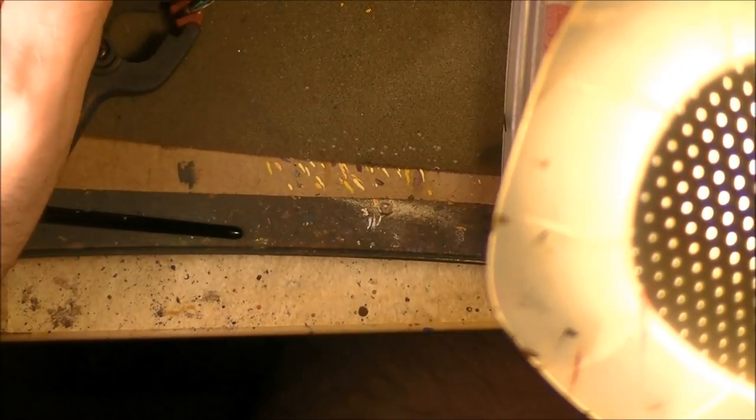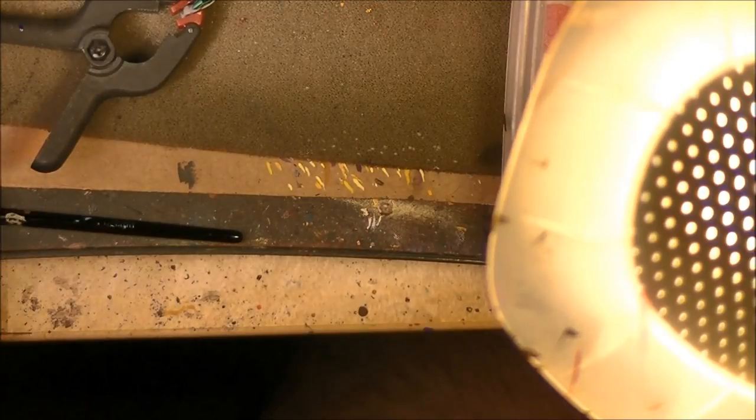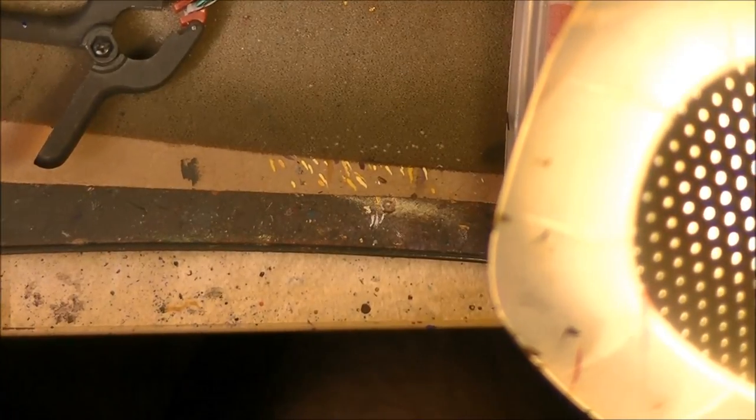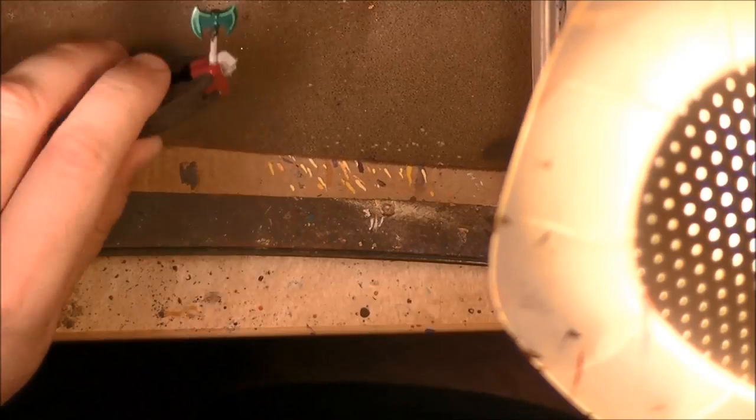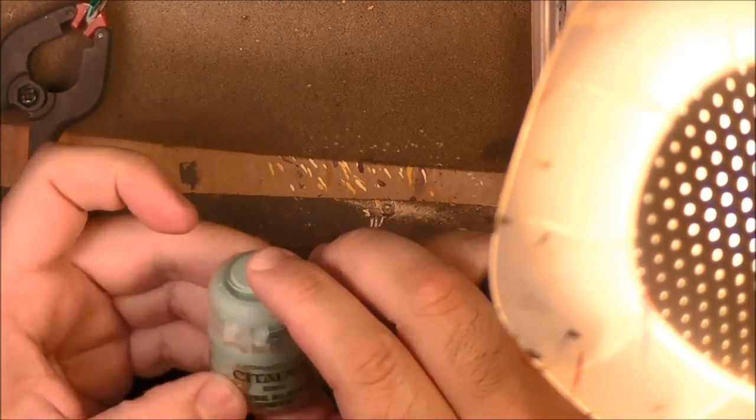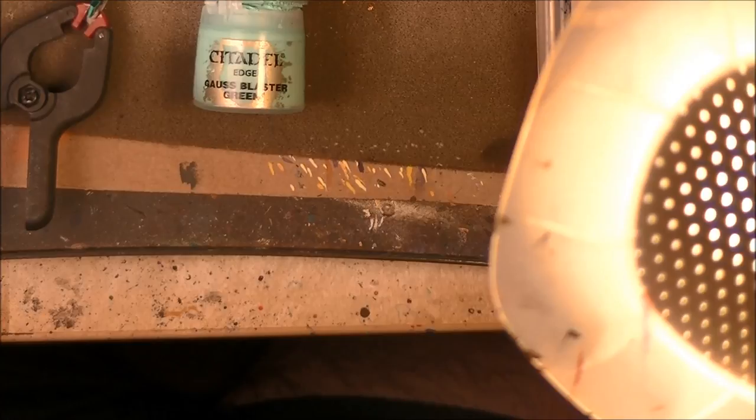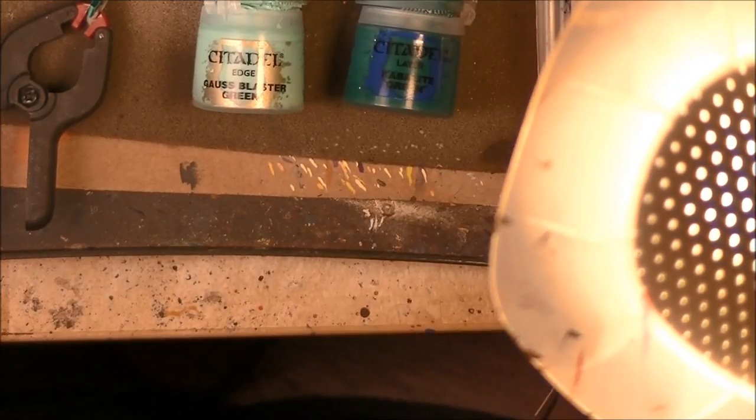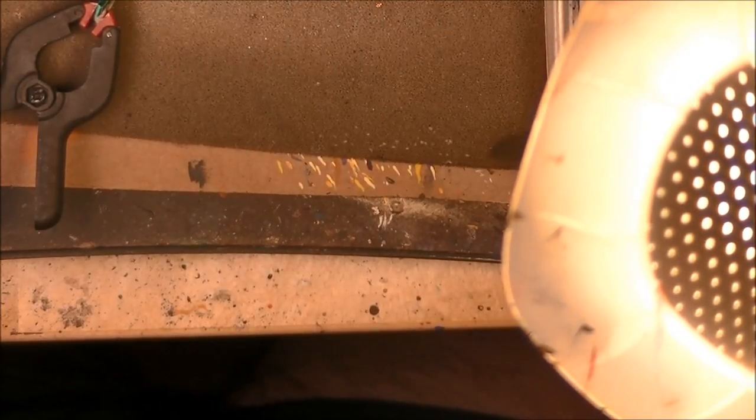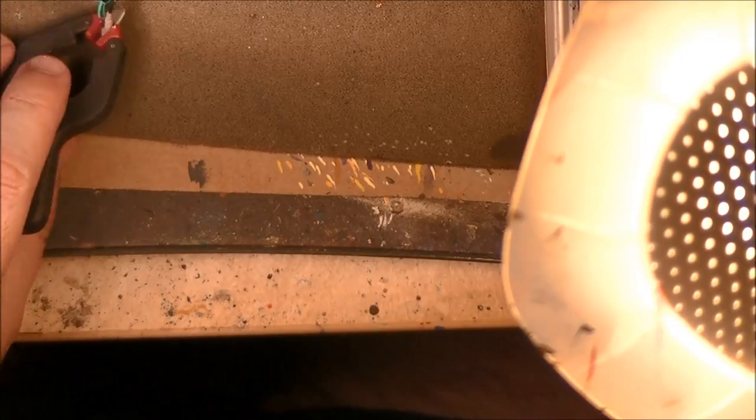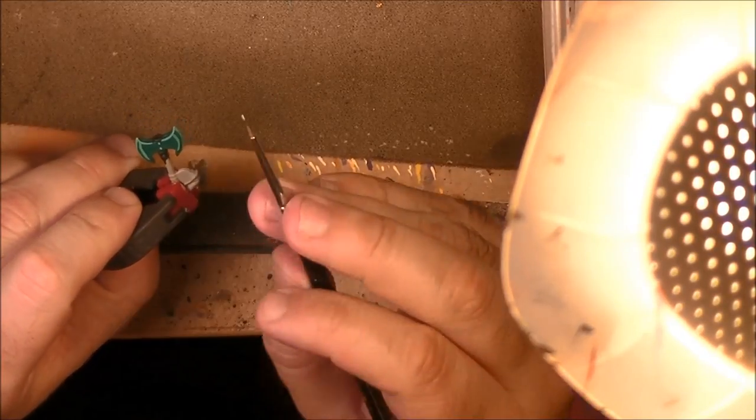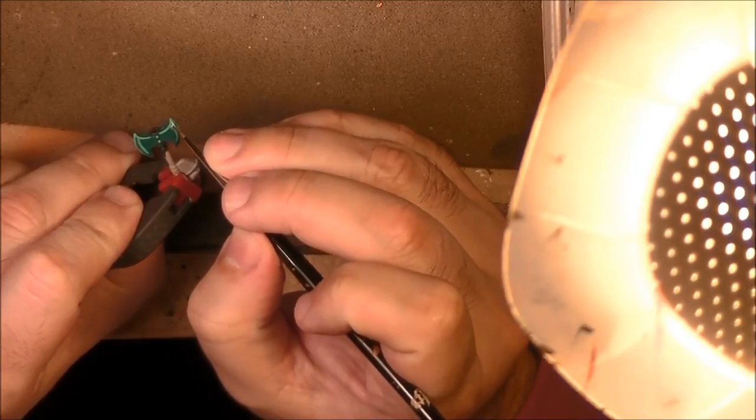What I was doing now is just to know where I want to do the strongest highlights. Then we are going to work on jade on the other part. So let's imagine that the light comes from the top. Now I have prepared the colors on my wet palette and we will start working on that. So I also, just as a reminder, I will use Gauss Blaster Green.